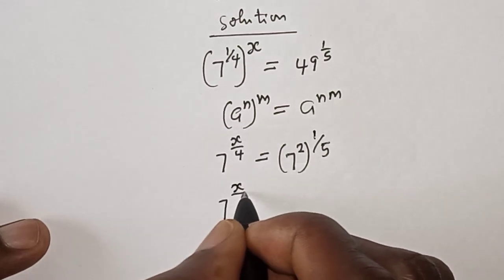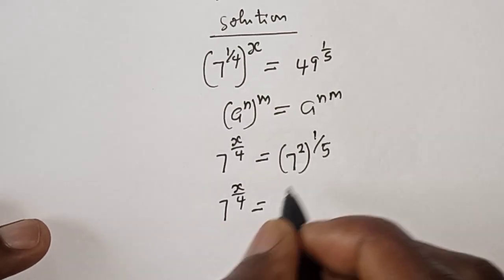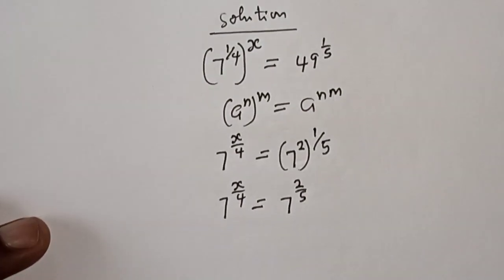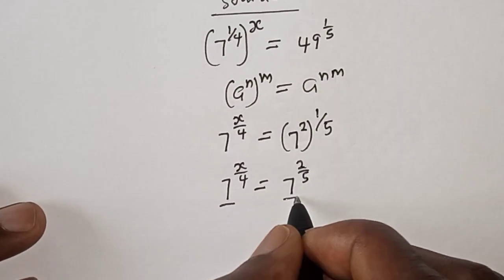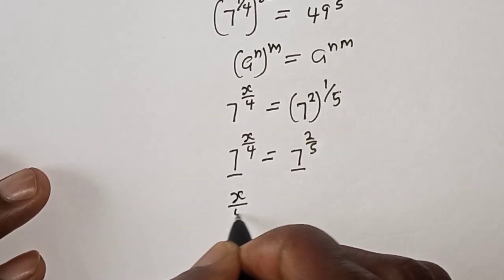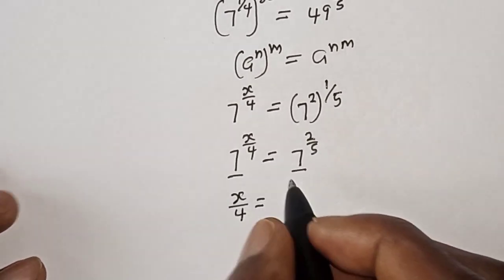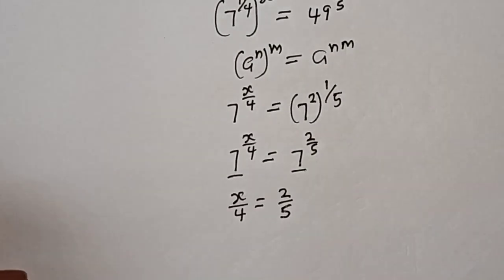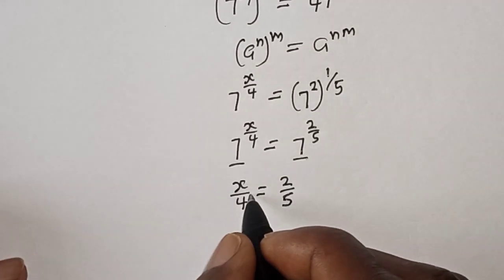Then this is 7 raised to power x over 4 is equal to 7 raised to power 2 over 5. Now they have the same base, 7, then we work with the exponents: x over 4 is equal to 2 over 5.